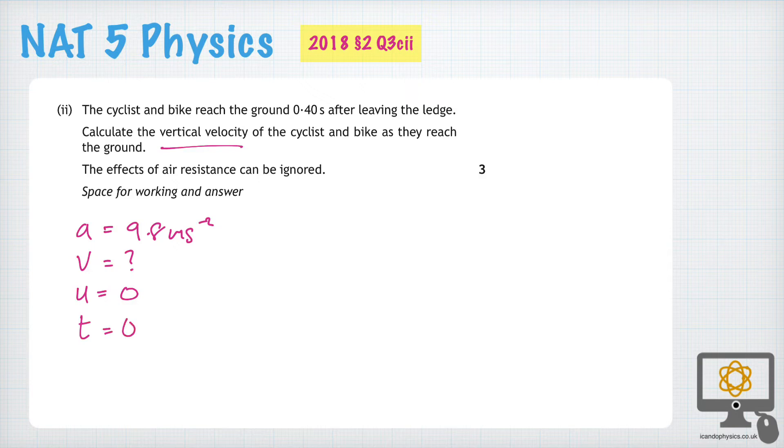And the time as given in the question for the flight of the projectile, the bicycle is 0.4 seconds. So we can use our equation for acceleration, A equals V minus U over T, and plug in the values. So 9.8 is equal to V minus 0 over 0.40.